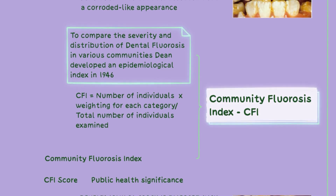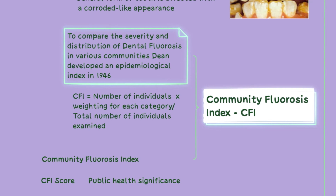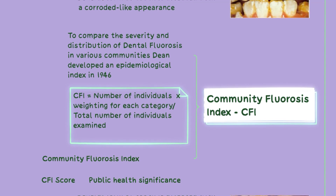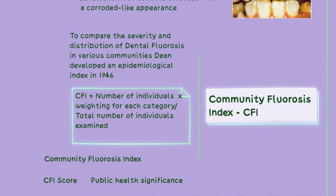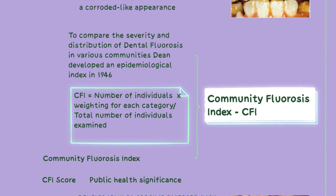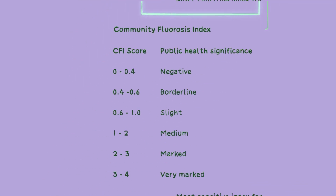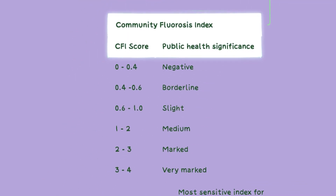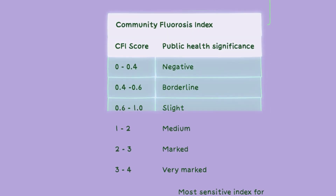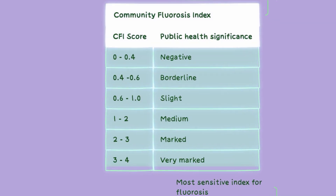The next index is the Community Fluorosis Index, an epidemiological index developed by Dean in 1946 to compare the severity and distribution of dental fluorosis in different communities. It is calculated as: CFI equals the number of individuals multiplied by the weighting for each category, divided by the total number of individuals examined. The CFI categorizes scores into different ranges from 0 to 4 according to severity, as shown in the table in the mind map.